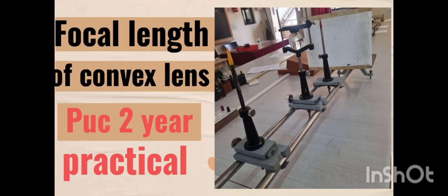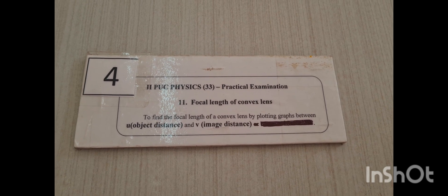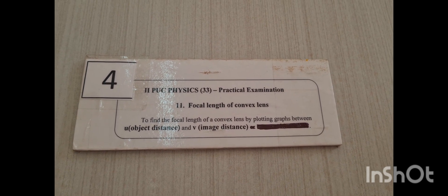Hello students, welcome to JSS RSH Physics Channel. The name of this optics experiment is focal length of a convex lens.